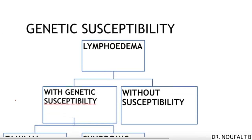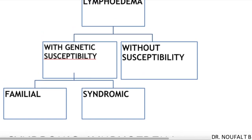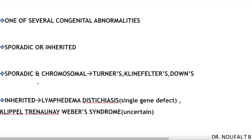Based on genetic susceptibility, primary lymphedema is divided into lymphedema with genetic susceptibility and without. Lymphedema with genetic susceptibility is further divided into familial and syndromic. In syndromic lymphedema, lymphedema will be one of several congenital abnormalities associated with that particular syndrome. Syndromic lymphedema can be sporadic or inherited.